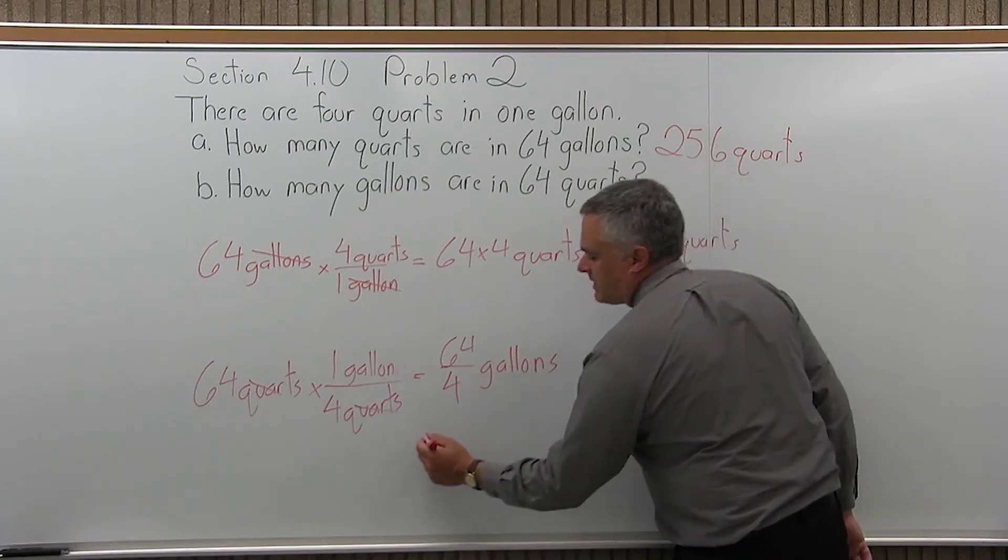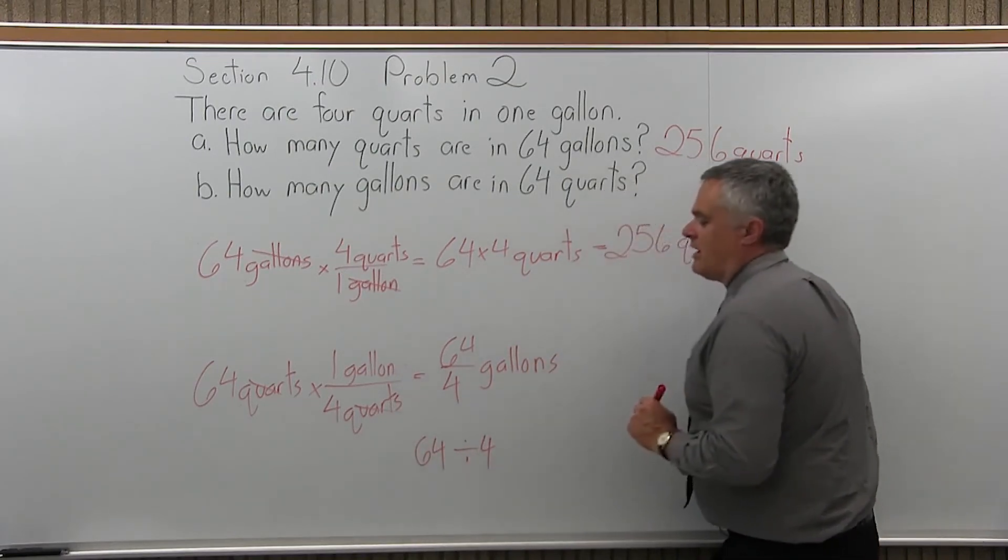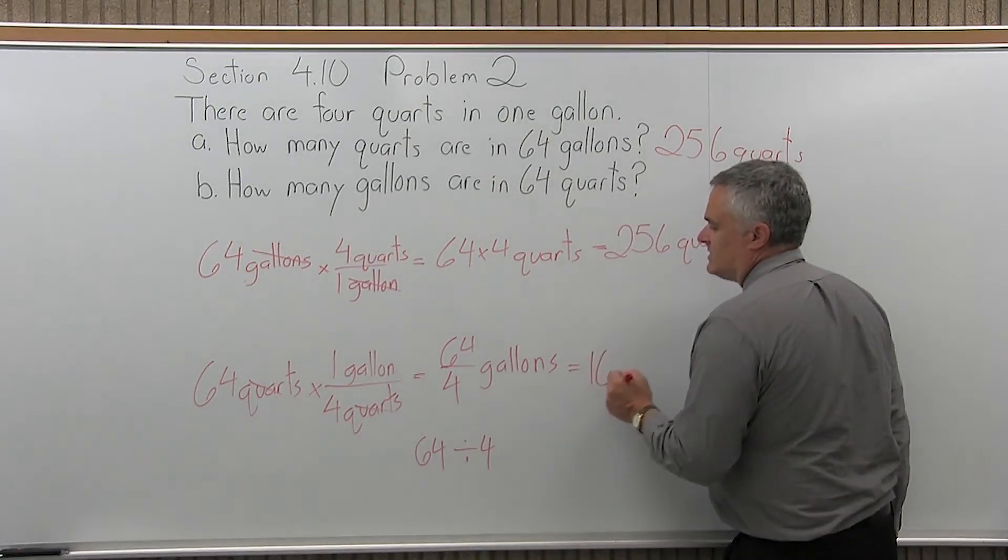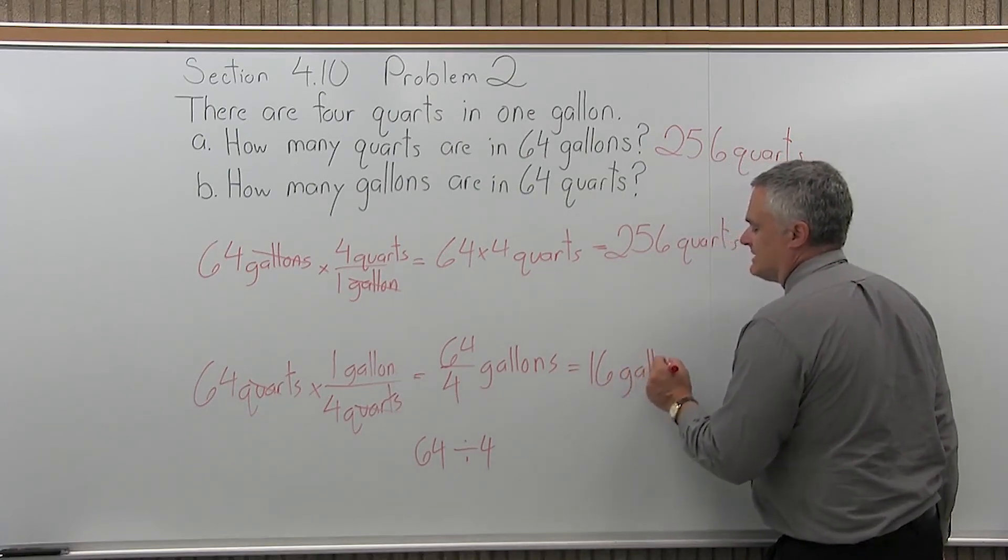So 64 over 4, you might be able to reduce that without a calculator or doing a division. If not, you can use a calculator, 64 divided by 4. And 64 divided by 4 is 16. You have to include the units of measure. That would be 16 gallons.